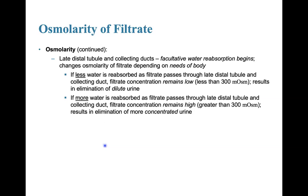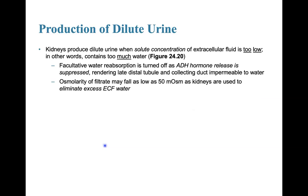However, if more water is reabsorbed as the filtrate passes through the late distal tubule and the collecting duct, the filtrate concentration remains high, greater than 300 milliosmoles, resulting in elimination of more concentrated urine. The kidneys produce dilute urine when solute concentrations of extracellular fluid are too low — in other words, when it contains too much water. Facultative water reabsorption is turned off as ADH release is suppressed, rendering the late distal tubule and collecting ducts impermeable to water, so the osmolarity of the filtrate may fall as low as 50 milliosmoles.